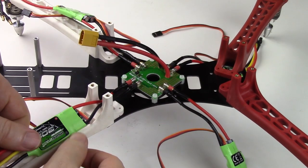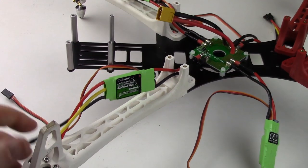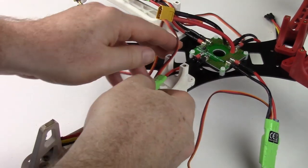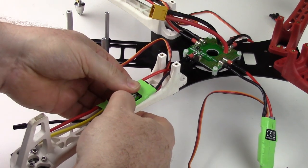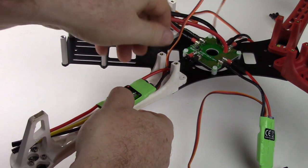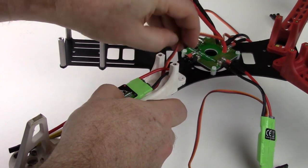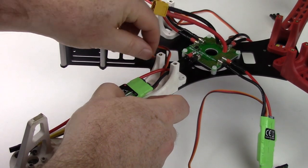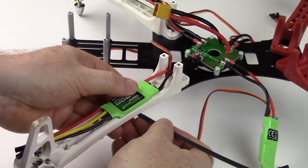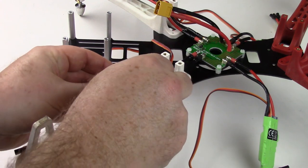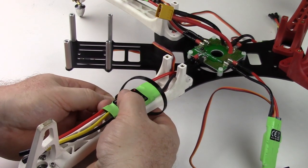So now that they're plugged into the control board, I like to lay each ESC out on an arm, and for these back ESCs we'll just lay them out nicely on the underside of the arm and zip tie the body of the ESC right to the arm.